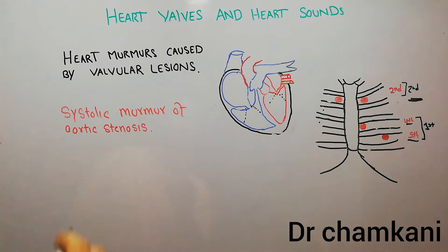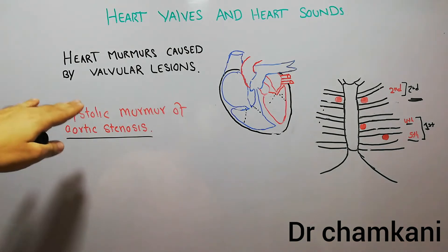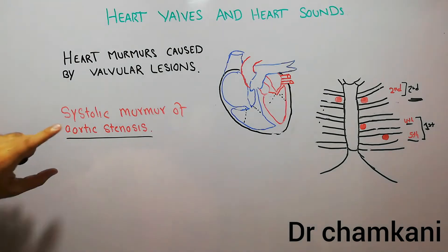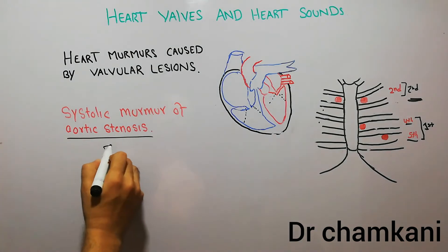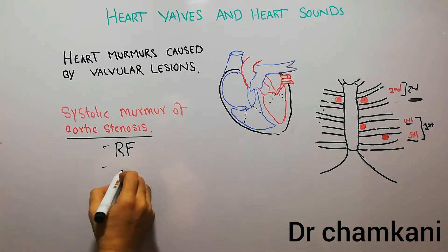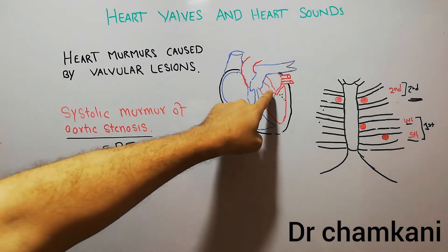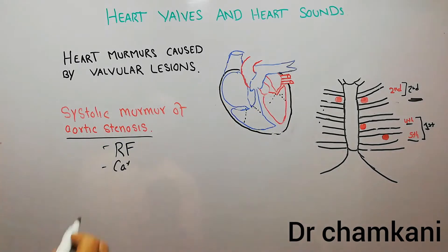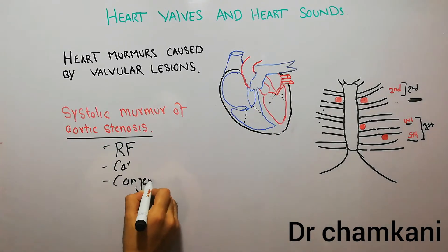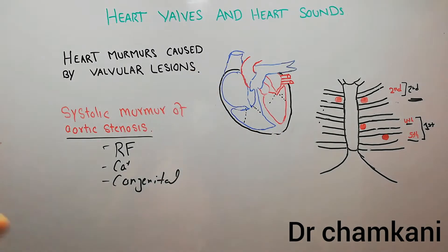Aortic stenosis is a very broad topic; we are not going into full detail but will focus on the systolic murmur of aortic stenosis. Aortic stenosis can be caused by rheumatic fever, especially in young people, by calcification due to calcium deposition in the aortic valves, by congenital conditions, and by a bicuspid aortic valve where there are only two cusps instead of three.